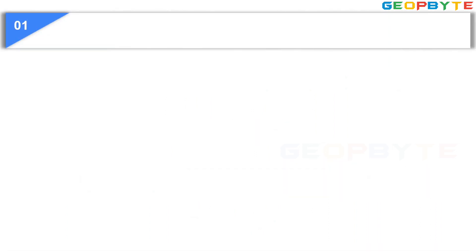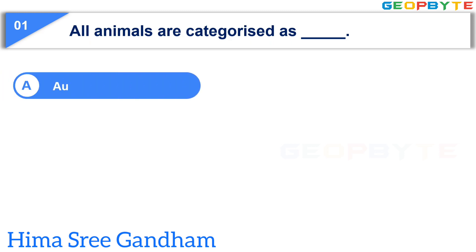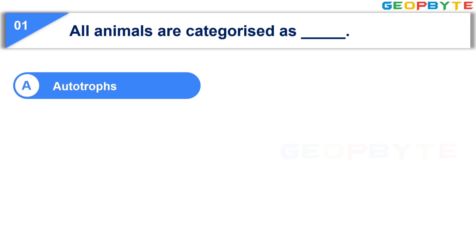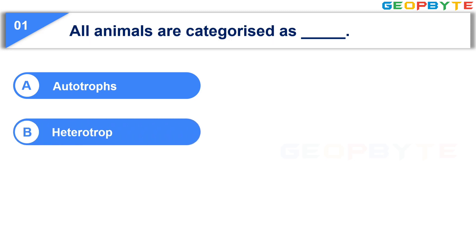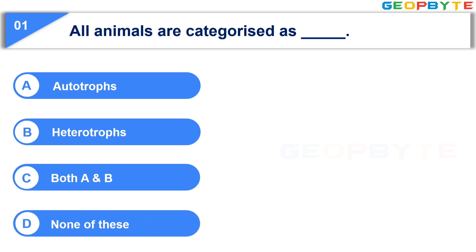The first question is: All animals are categorized as dash. Option A: Autotropes. Option B: Heterotropes. Option C: Both A and B. Option D: None of these. Your time starts now.